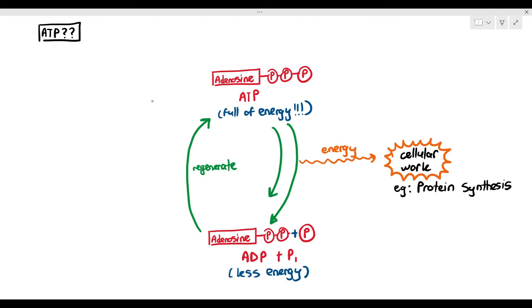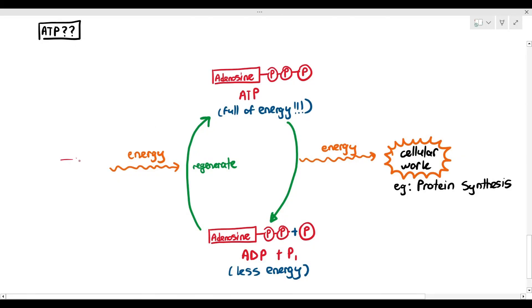It can be regenerated from ADP and phosphate by joining them together through condensation. But when ATP is hydrolyzed to ADP and phosphate, it releases energy. So logically, for ADP and phosphate to be joined together back into ATP, it needs to get energy. One of my favorite questions to ask students is, where does this energy come from?